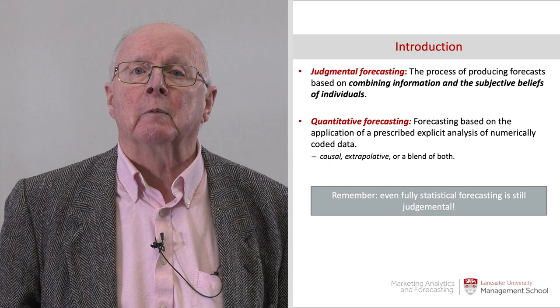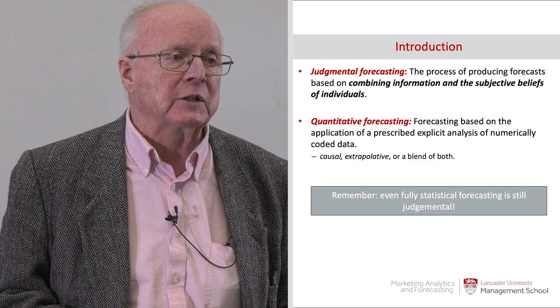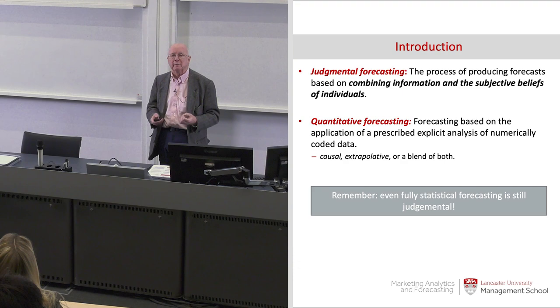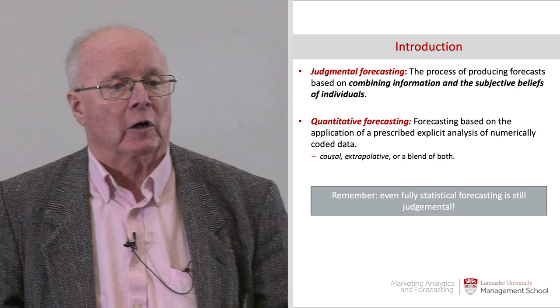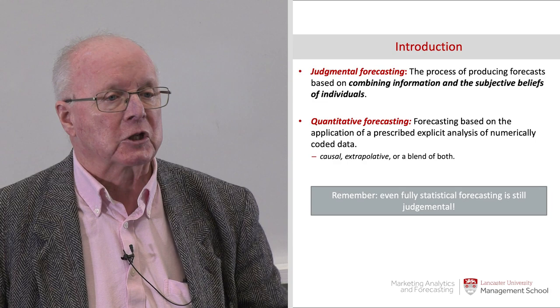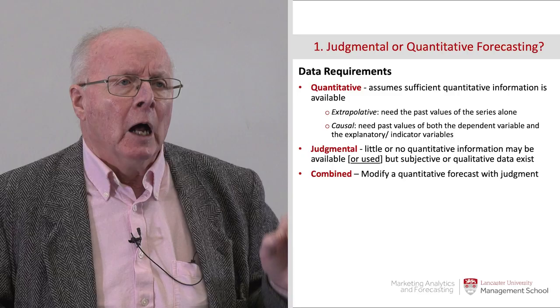Just to remind you of the differences between judgment methods and quantitative methods. The key element of a judgmental method is that it combines information informally and takes into account the subjective beliefs of individuals. Subjective perceptions are important — we may aggregate these up, combine them in various ways, but you can't repeat judgments in exactly the same way. Quantitative methods have algorithmic backgrounds, a formal statement of a set of relationships, producing a forecast pretty automatically — although there's a judgmental component even in that. So this apparently fully statistical forecasting method is still judgmental.